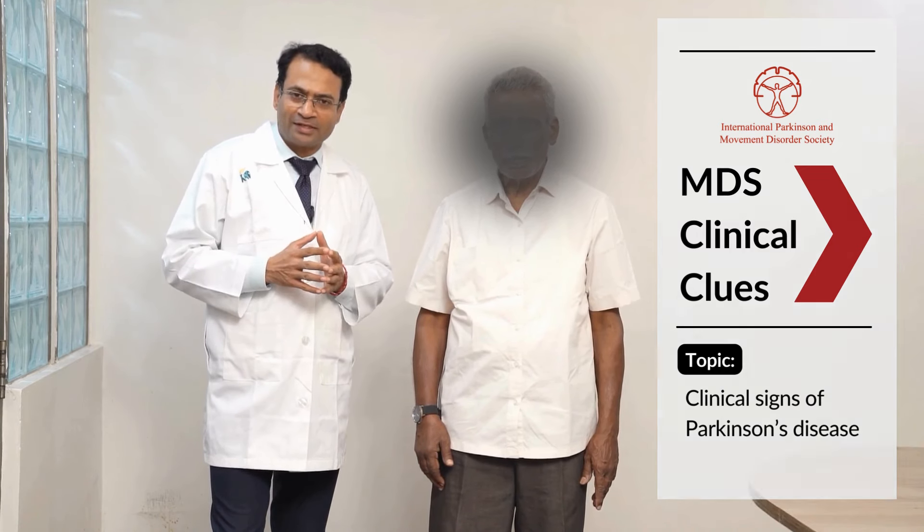Usually in every Parkinson's patient, one side of the body is more affected than the other side. They may have more bradykinesia and rigidity on one side of the body.